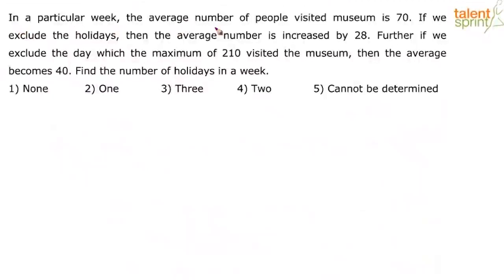In a particular week, the average number of people who visited a museum is 70. If we exclude the holidays, then the average number is increased by 28. Further, if we exclude the day on which the maximum of 210 visited the museum, then the average becomes 40. Find the number of holidays in a week.